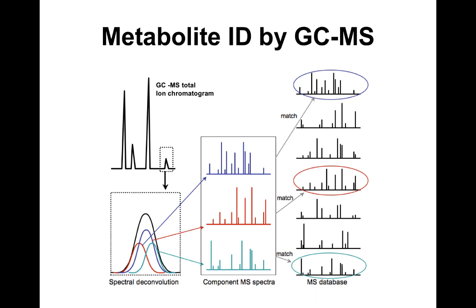GCMS is a different beast. Typically you work with a mass spec and a gas chromatogram. You'll have a chromatogram, choose a peak, and within that peak find multiple other peaks — many compounds can have the same elution time. The only way to distinguish compounds with the same retention time is to collect their spectra, within the retention time versus m/z mapping.